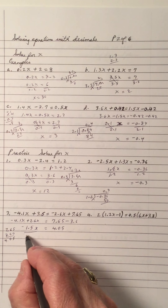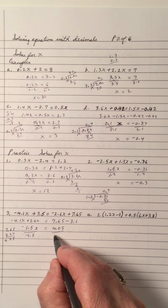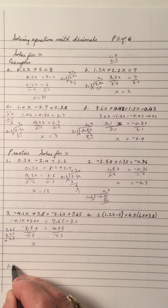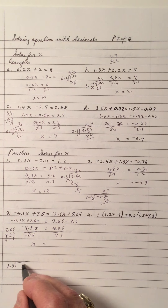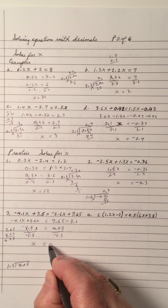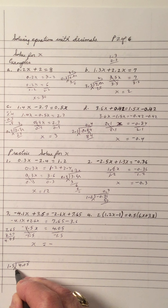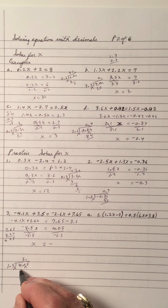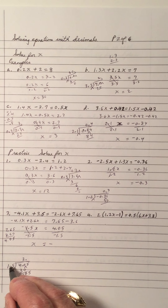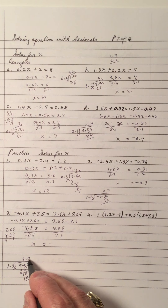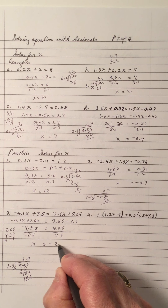Now we're going to divide by negative 1.5 on each side. That cancels to give me an x. When I divide here, I get 1.5 divided into 4.05. We know that's positive divided by negative, so it's a negative answer. Move the decimal in one place. 15 into 40 goes 2; 2 times 15 is 30, subtract and I get 10. Bring down the 5, so 15 into 105 goes 7. So it's negative 2.7.